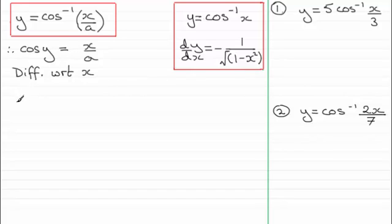We differentiate cosine of y with respect to y, and we end up with minus sine y, and then we multiply this by dy/dx. Then to differentiate x over a, x times 1 over a, you're just going to be left with 1 over that constant, that positive constant a.